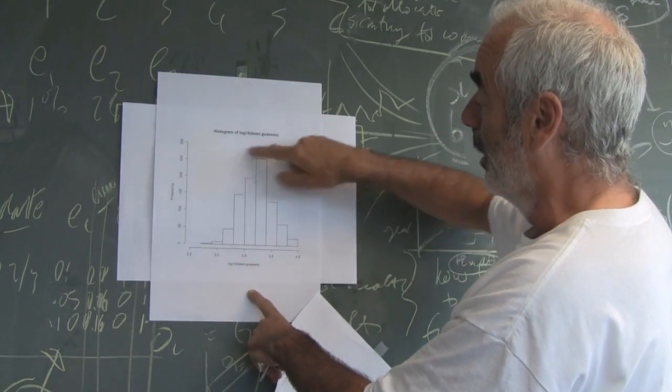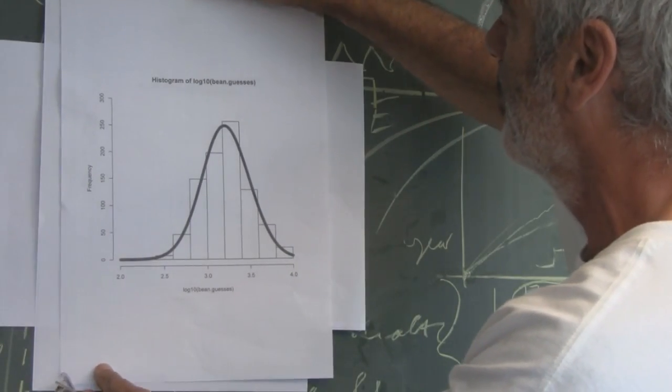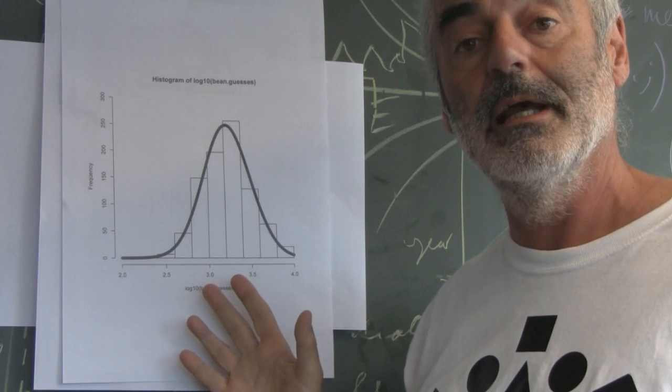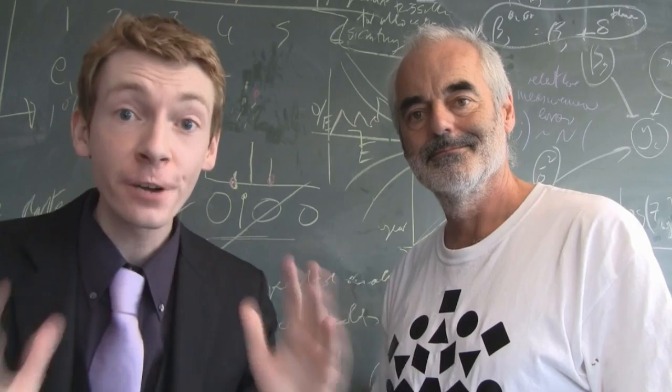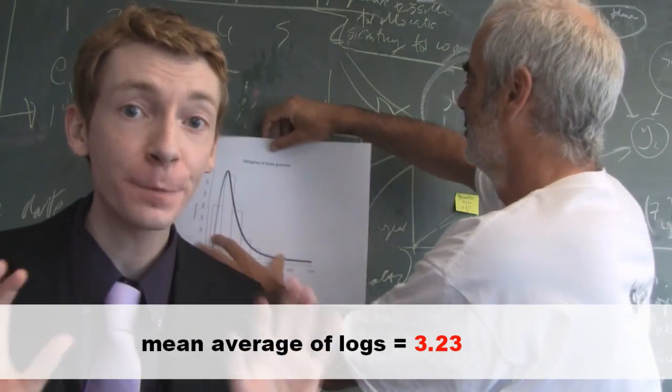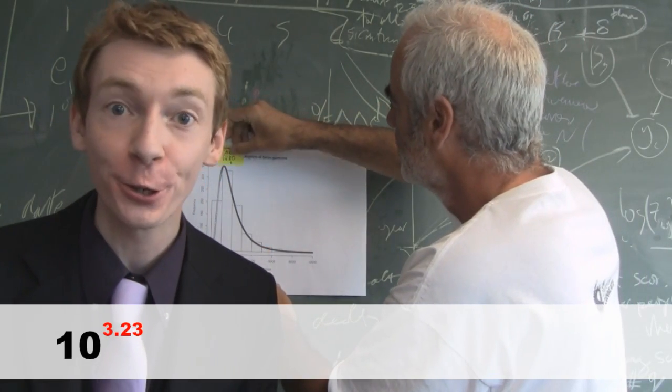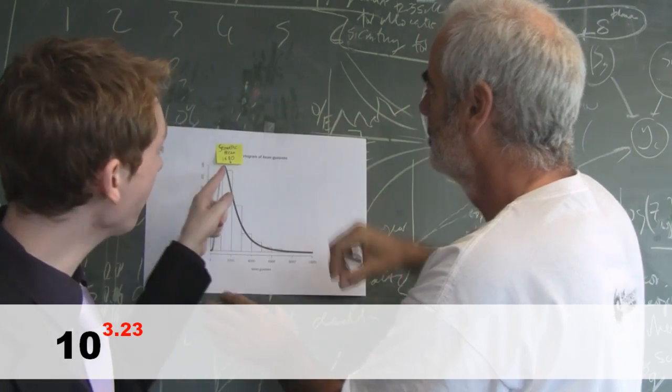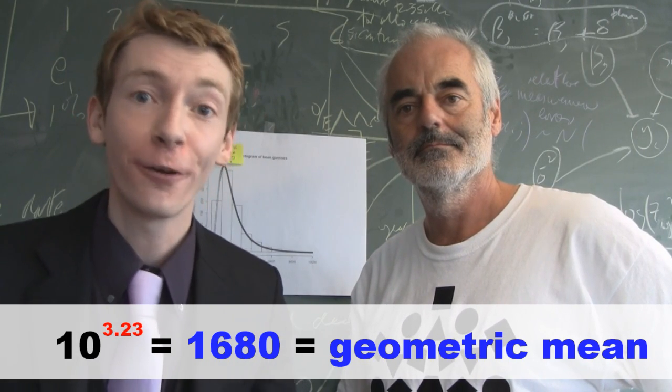When you do this, you end up with a really nice symmetric distribution. And, in fact, then we can fit a normal curve to that, the standard old bell-shaped curve, and it fits the data rather well. And that means, if we fit a normal distribution to the data, then we know how to take the average. We should just take the sample mean of those logarithms of the observations in order to estimate the centre of this distribution. So, this is what we did. We took the average of the log of the data, and we found that the average power of 10 was 3.23. So, if we take 10 to the power of 3.23, we get our average now as 1,680. And this is called the geometric mean.